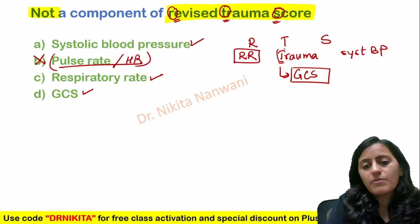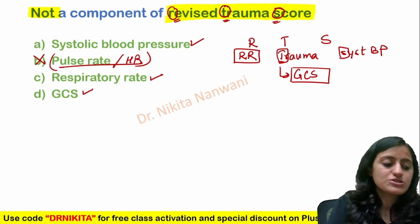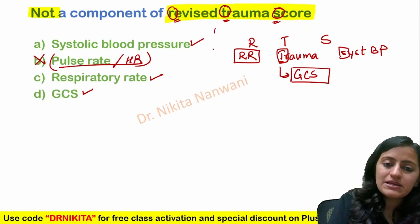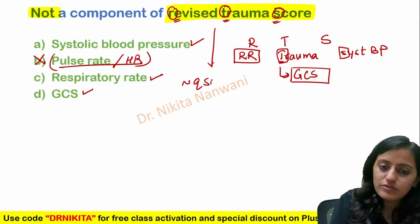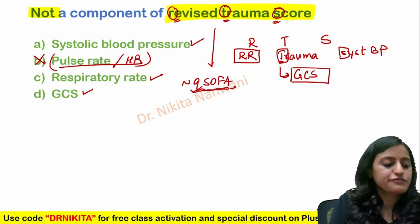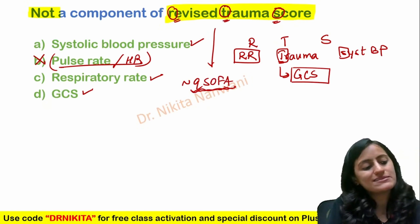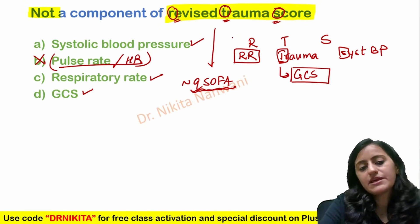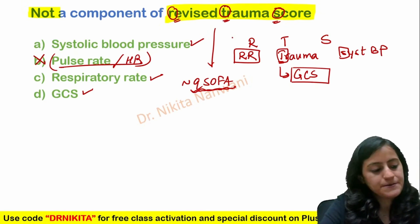Similar to RTS, which other score has the same components? It is the qSOFA score — qSOFA also has the same components: respiratory rate, GCS, and systolic blood pressure.